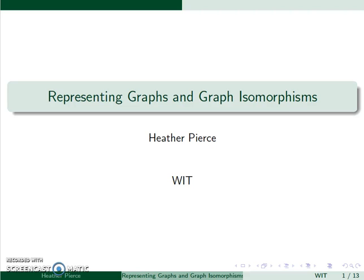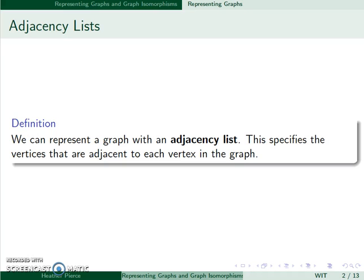We'll now look at different ways to represent graphs and graph isomorphisms. We can represent a graph with an adjacency list. This specifies the vertices that are adjacent to each vertex in the graph.